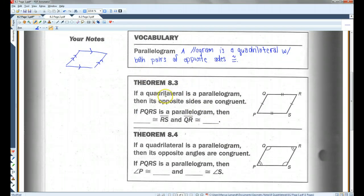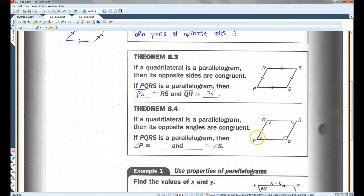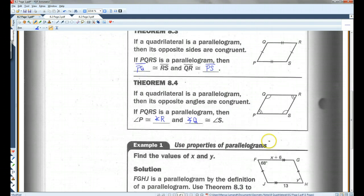All right, theorem 8.3. If a quadrilateral is a parallelogram, then its opposite sides are congruent. So, if PQRS is a parallelogram, then PQ is congruent to RS and QR is congruent to PS. Also, if a quadrilateral is a parallelogram, then its opposite angles are congruent. So, in this case, if this is a parallelogram, angle P is congruent to angle R because they are opposite each other. Angle Q is congruent to angle S because they are also opposite each other.